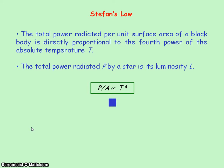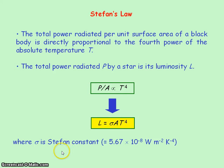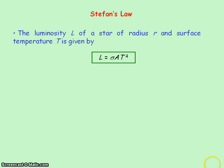And so it's given by this equation where sigma is Stefan's constant. And because luminosity is a measure of power, its unit will be the watt. So a star which has a radius r will have a surface area of 4 pi r squared, and so the luminosity of this star will be given by this equation.